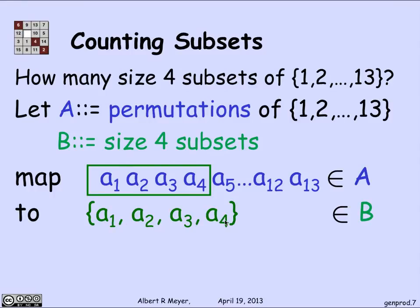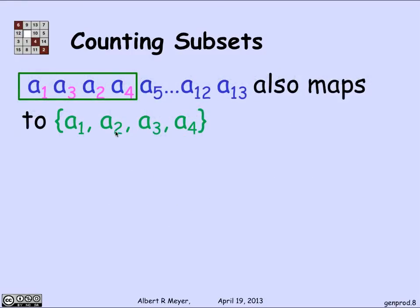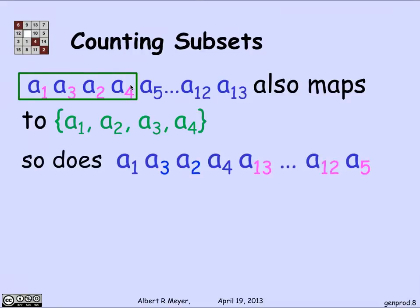And if we got A1 through A4 as the set, what other things map to that set A1, A2, A3, A4? Well the answer is any permutation with the same first 4 elements but possibly in a different order. Because we're just going to take the first 4 in sequence and map them to the set of those first 4. The order in which the first 4 doesn't matter. And likewise, the order of the remaining 9 elements, 5 through 13, also doesn't matter. Whatever they are, if I have a given set of 4 elements to start, no matter what the remaining 9 are, they're going to map to the same subset of 4 elements.